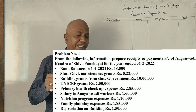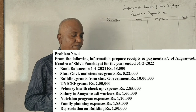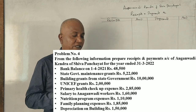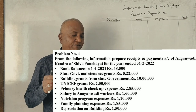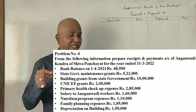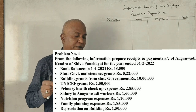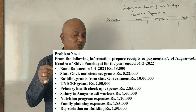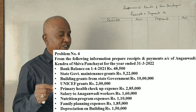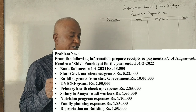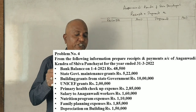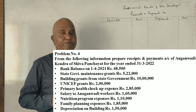The items include: state government maintenance grants, building grants from state government, UNICEF grants, primary health checkup expenses, salary to Anganwadi workers, nutrition program expenses, family planning expenses, and depreciation on building.